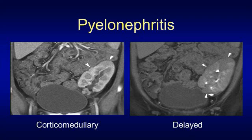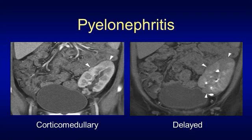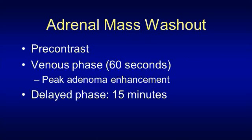Pyelonephritis is seen better on the venous phase than on the corticomedullary phase, but on the delayed phase we really see the bands of decreased enhancement very well, as shown in the image on the right. If we had to select one phase to image pyelonephritis, it would be best seen on delayed phase, but in most cases we are looking at a venous phase in a patient with abdominal pain and we should see the pathology well.